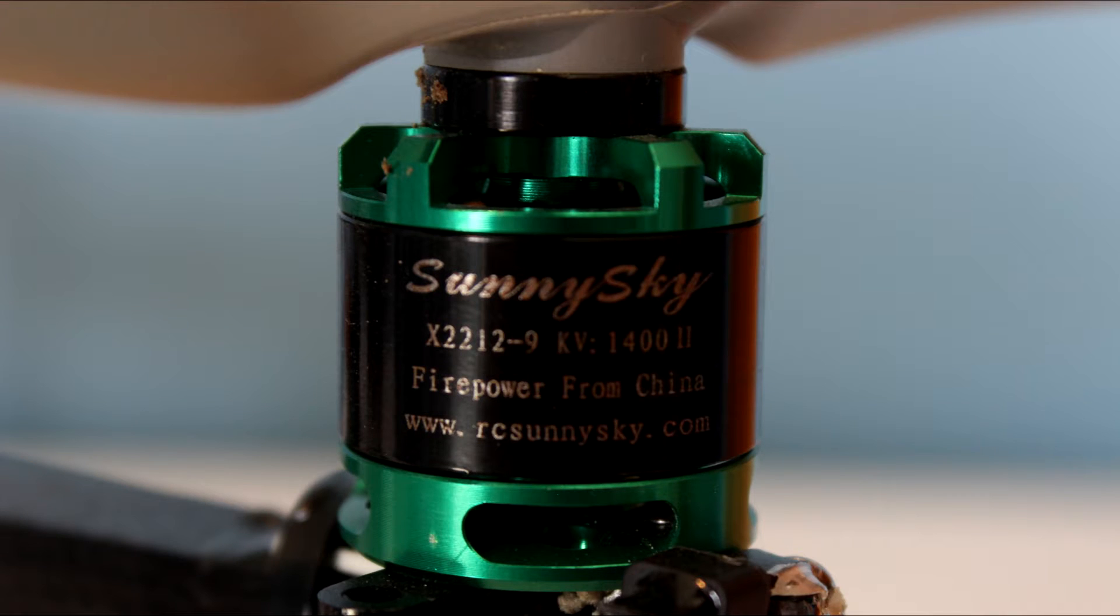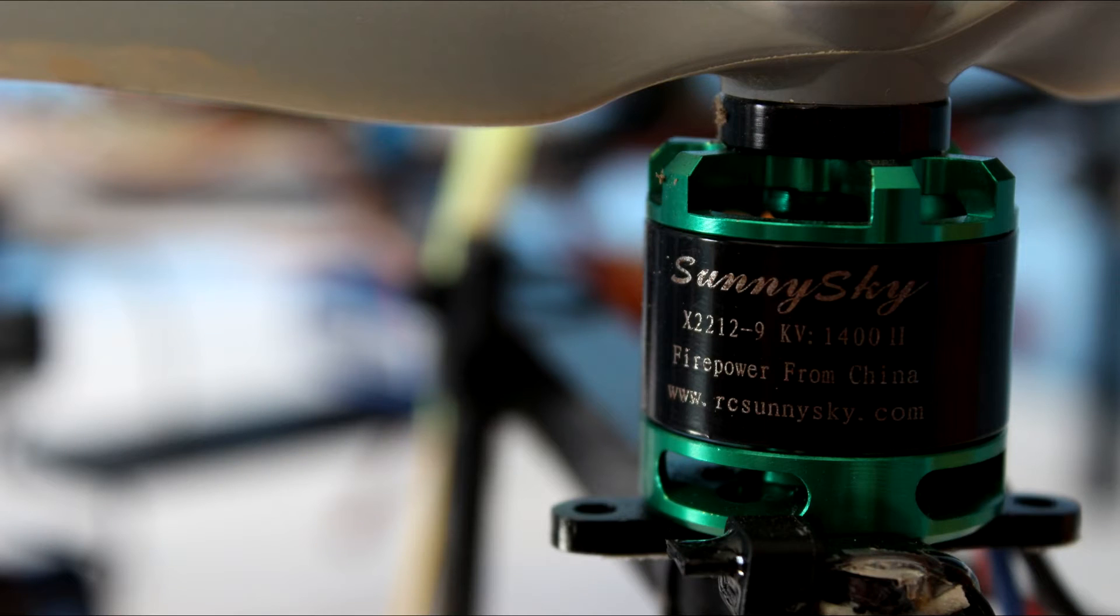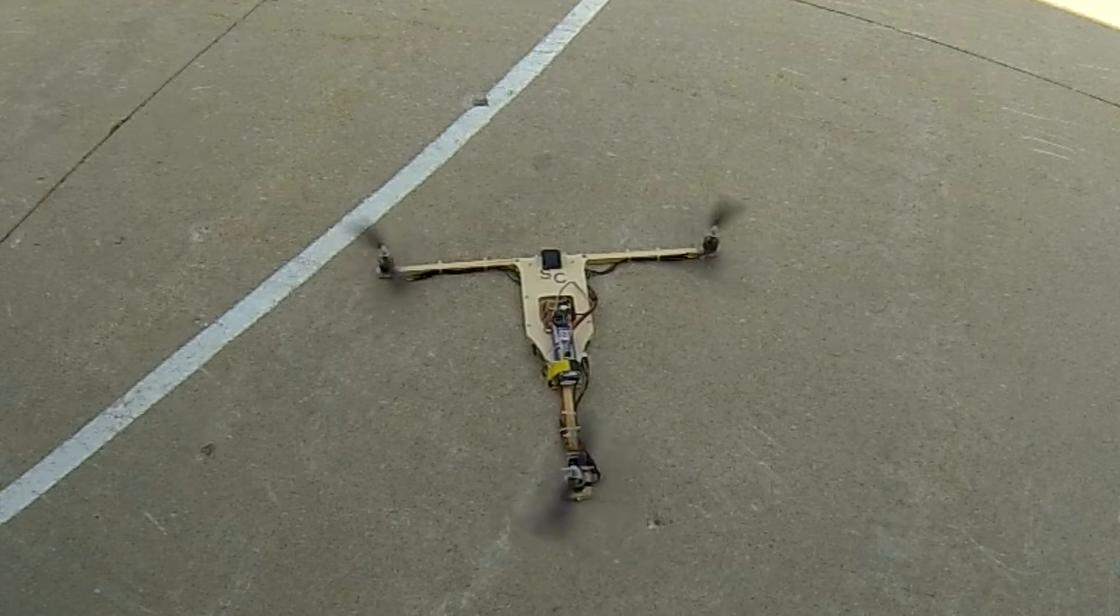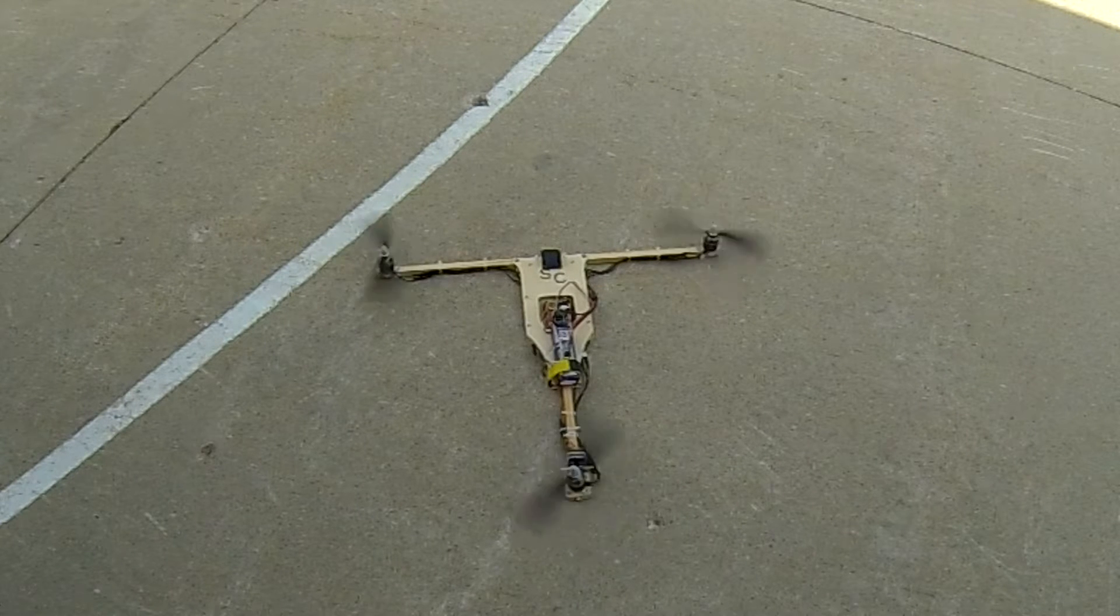To start off, it has X2212-9 1400kV Sunny Sky motors which are purchased from BuddyRC.com. These motors can produce over 4 pounds of thrust each and can be run off of either 3-cell or 4-cell. Also, being a higher KV, they are both quieter and cause less vibration since the props spin so fast.